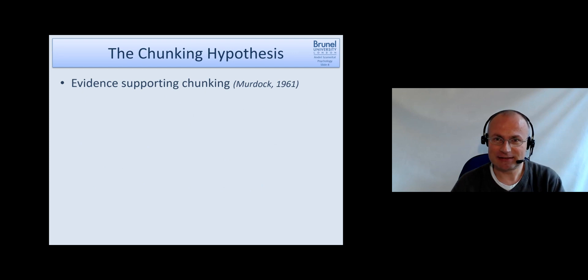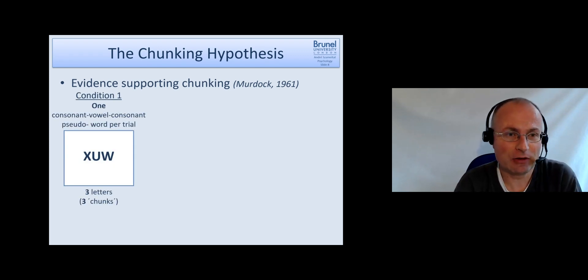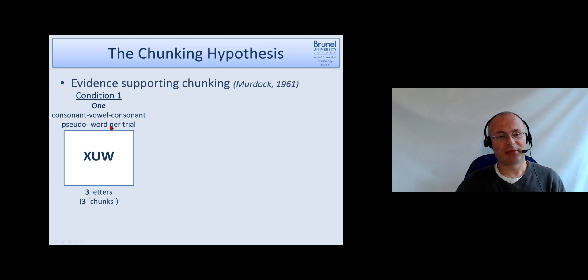Okay, in the early 1960s Murdoch did a study to support that with a proper empirical test. There were three conditions. The first condition was where participants were shown a consonant-vowel-consonant triplet, like a pseudo word, one word per trial. Because it's a non-word, people have to remember that as three letters, XUW. If you would see that on the screen and rehearse it in your mind, you would probably say XUW, XUW and so forth. So in a way each letter constitutes a chunk in itself. We have three letters as an amount of information and also three chunks.